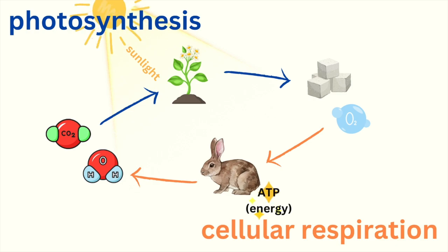So plants help create the oxygen and food we need, and we help return carbon dioxide and water to the environment. It's a perfect cycle.